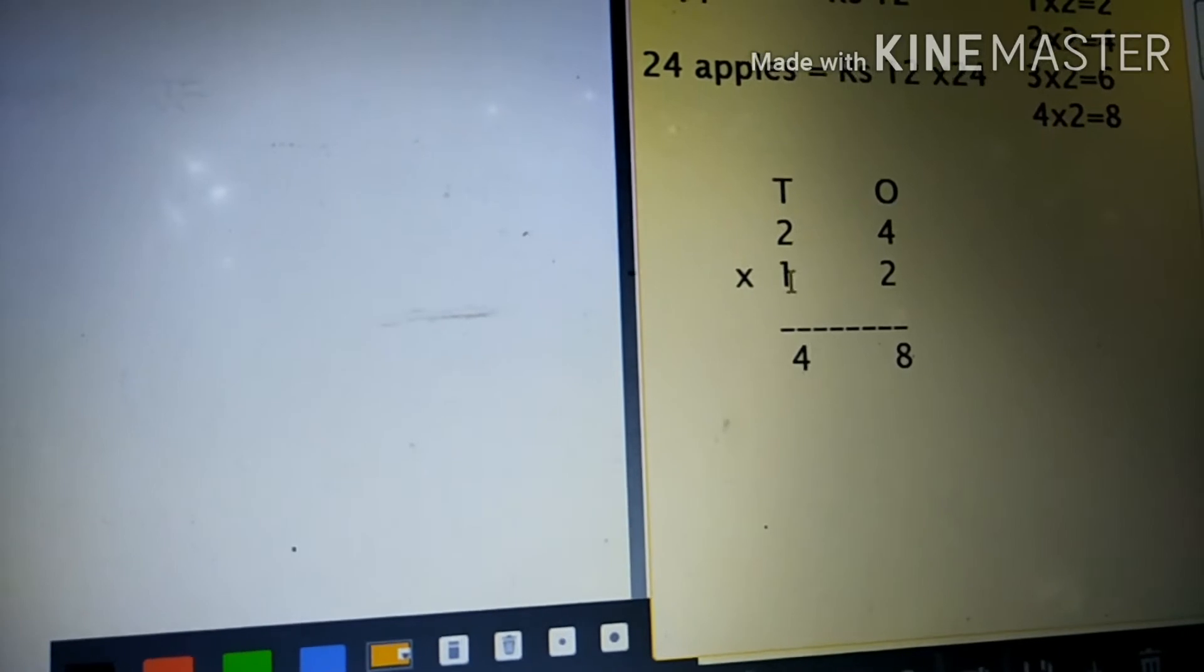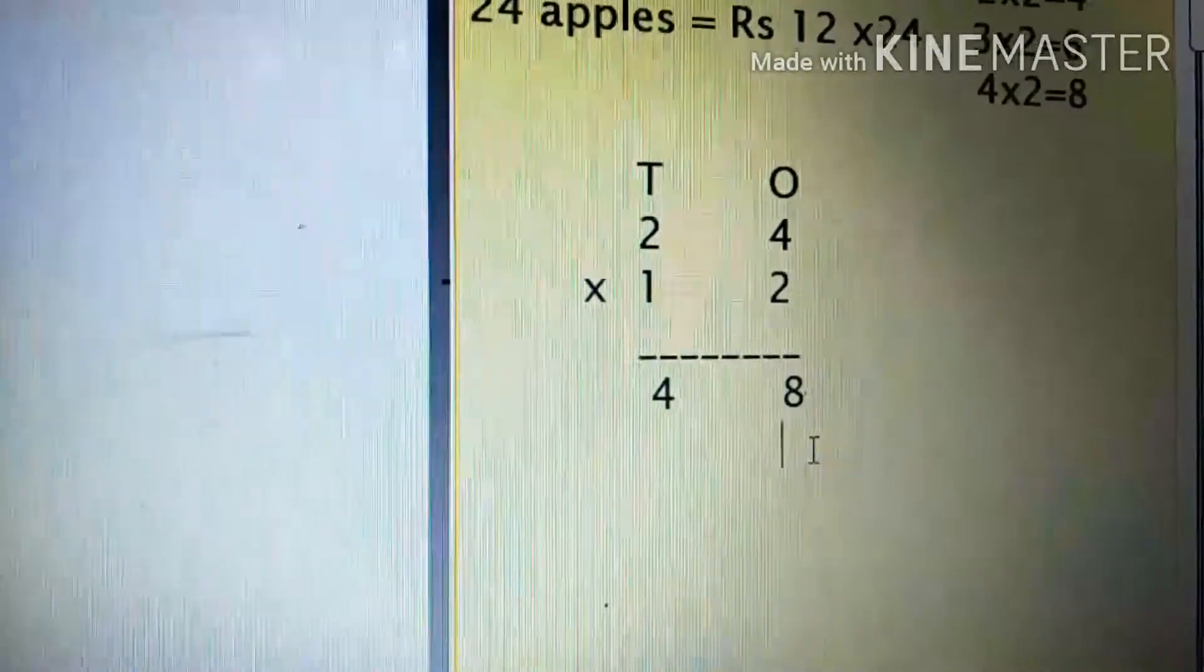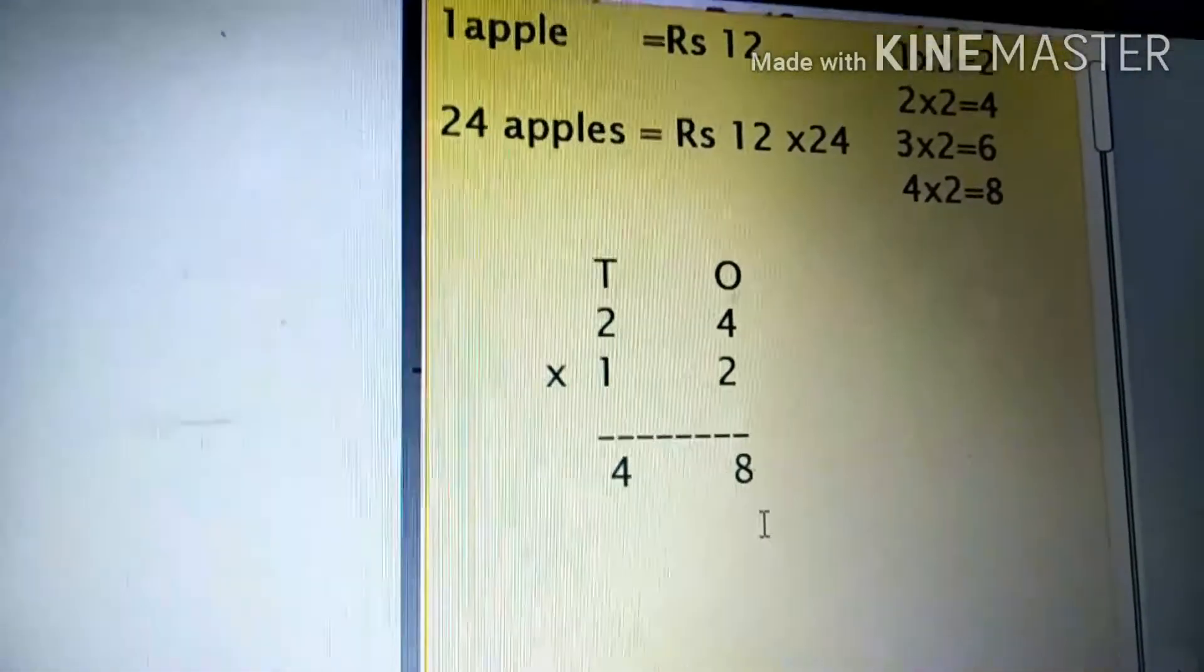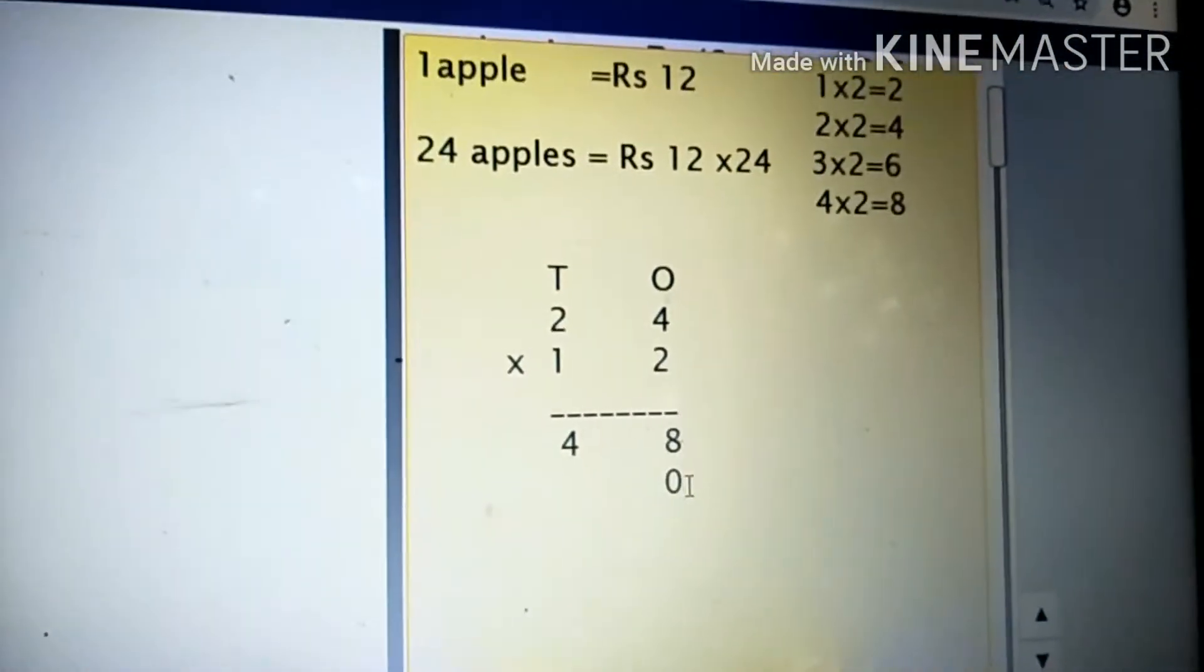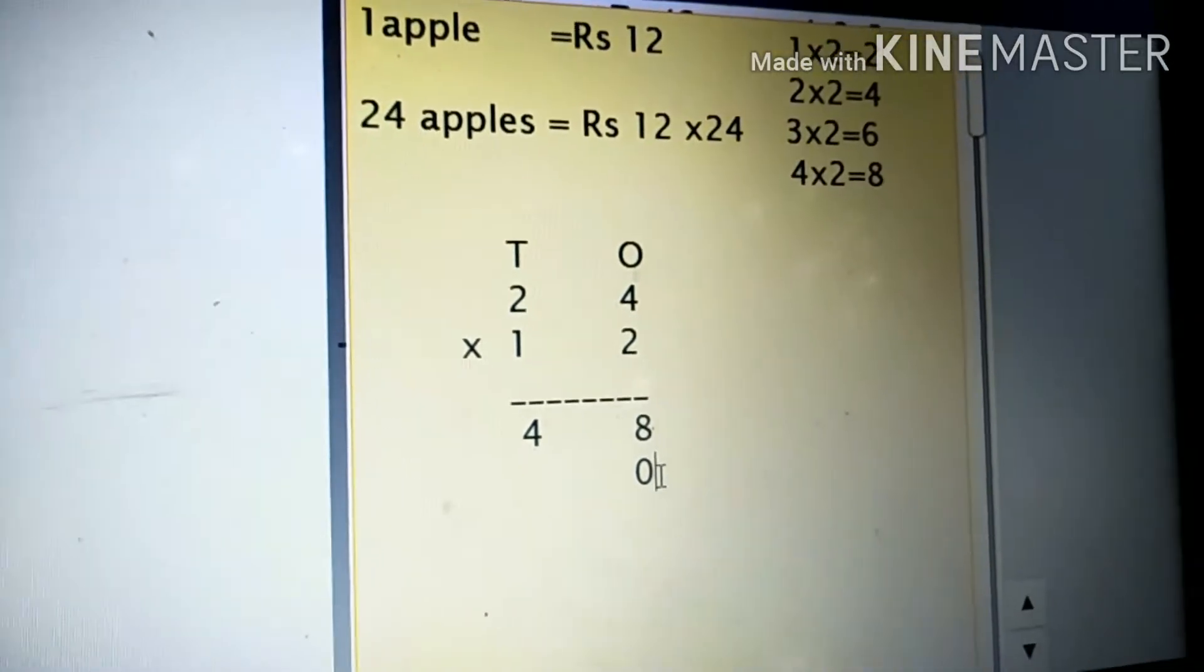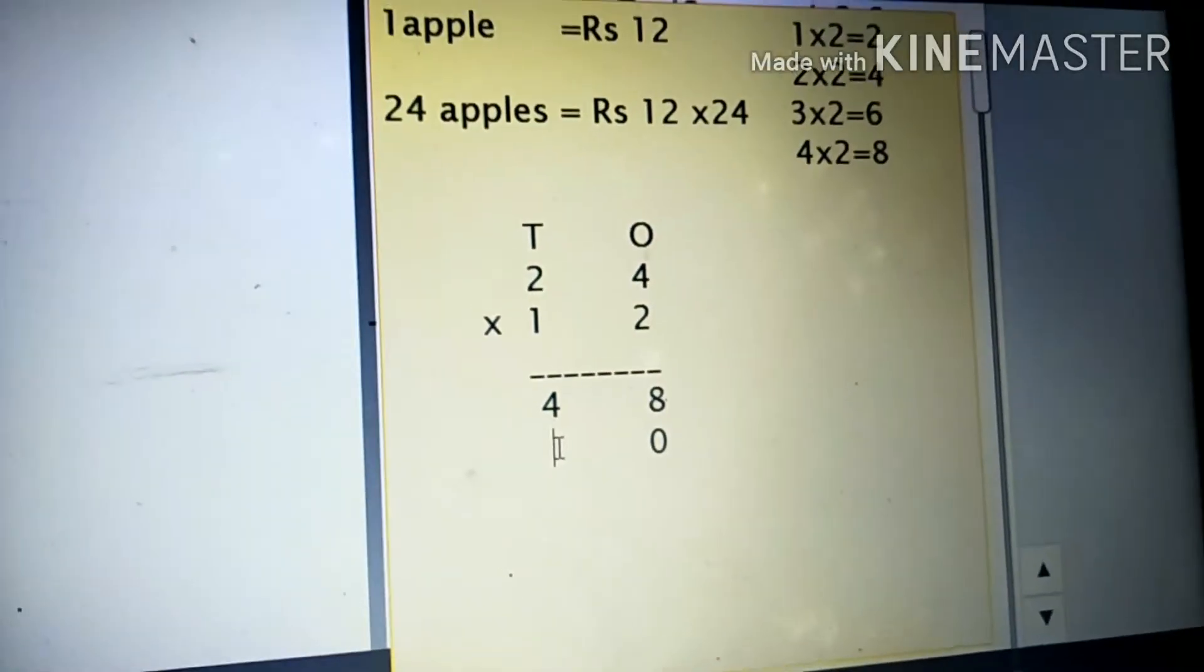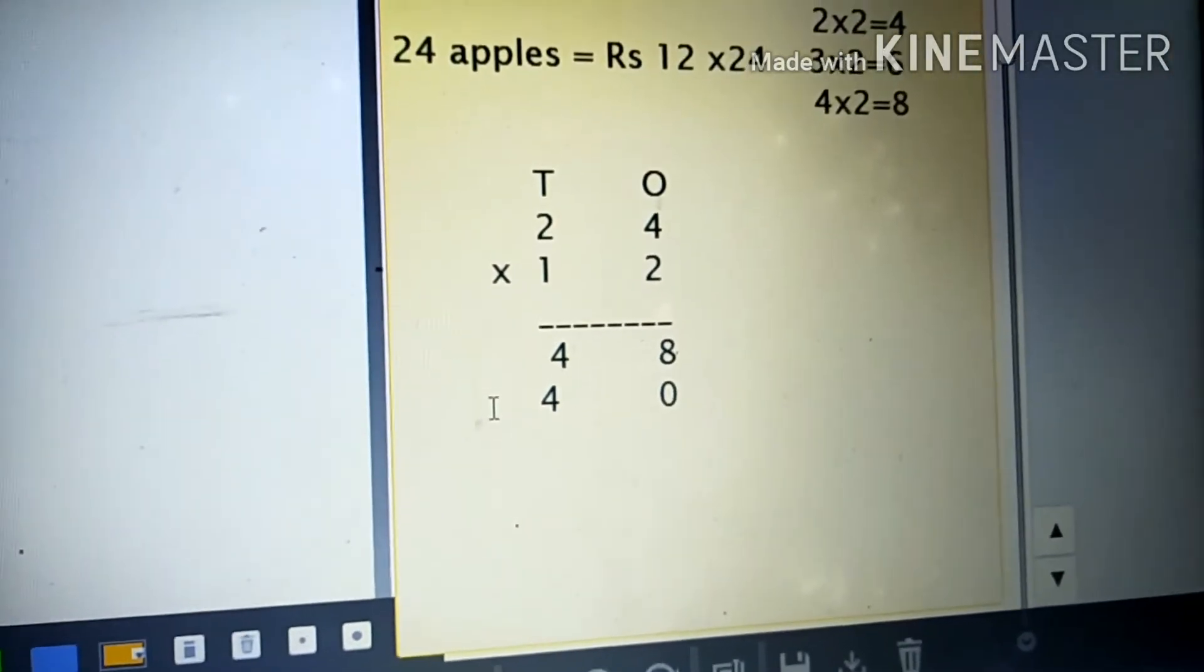Next, take the tens place. Here we have one. So under the ones place we put zero. Then one four is four, one two is two.